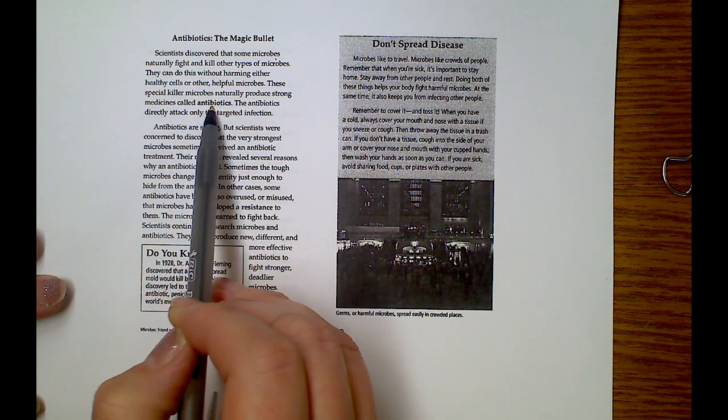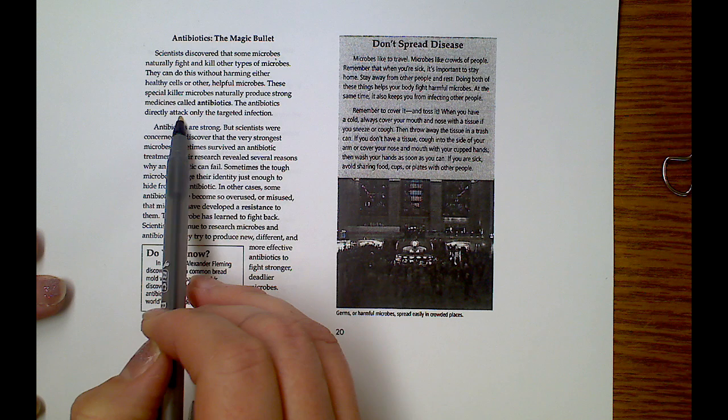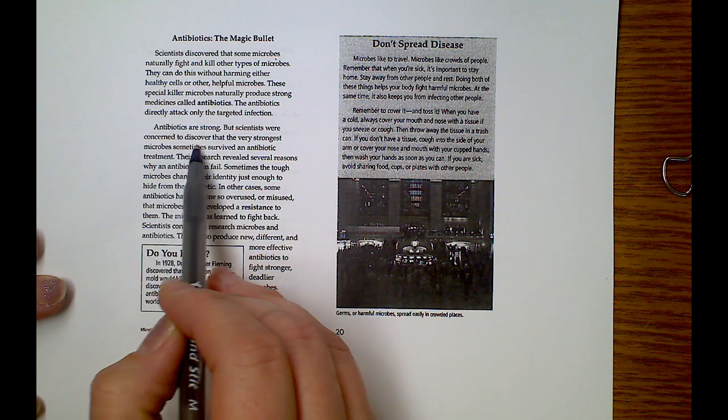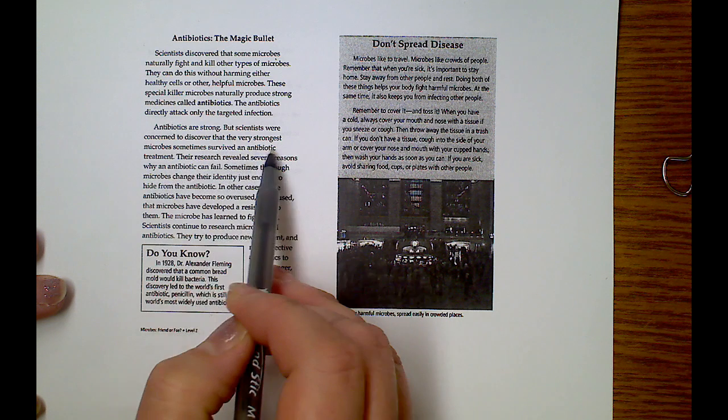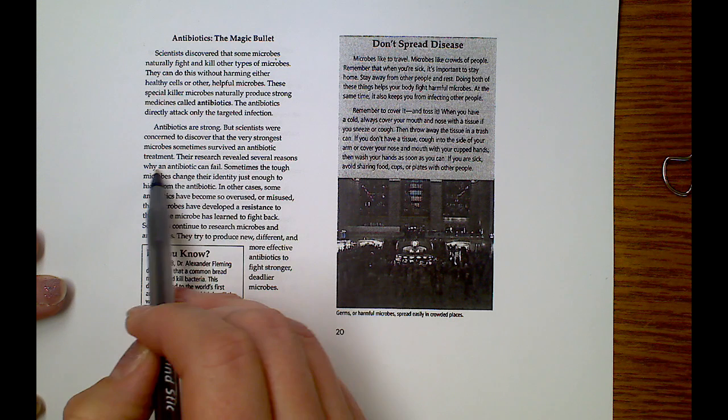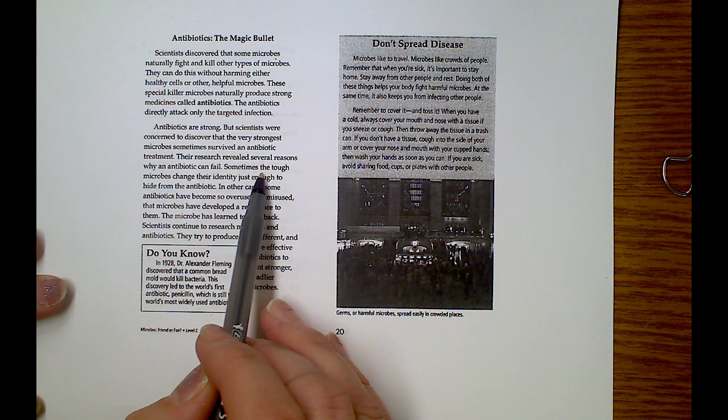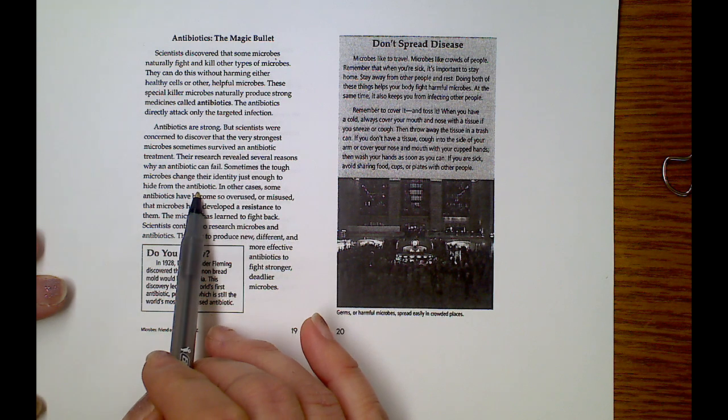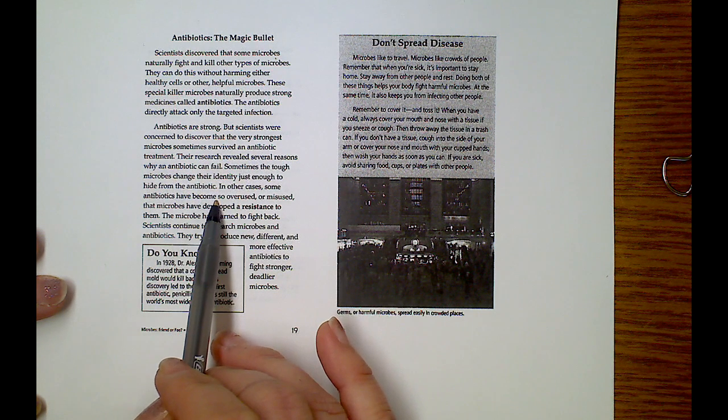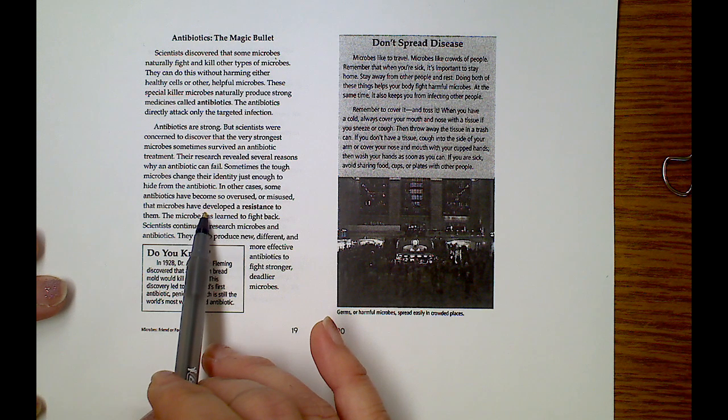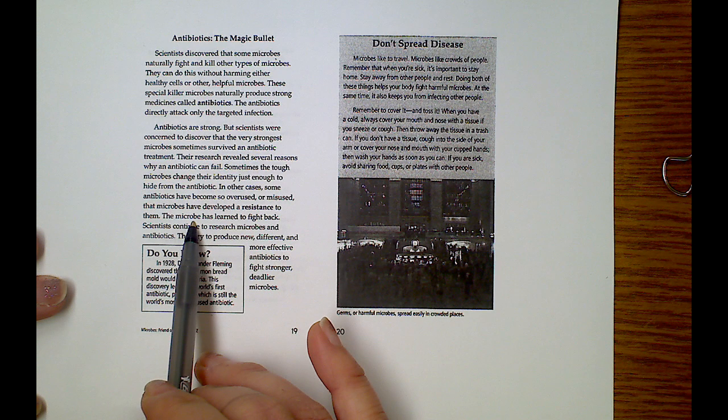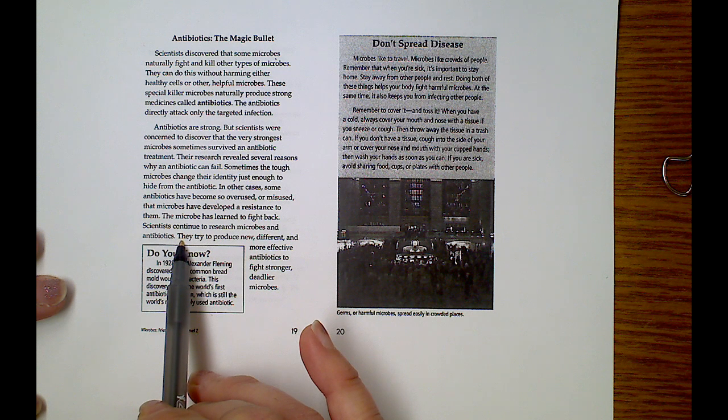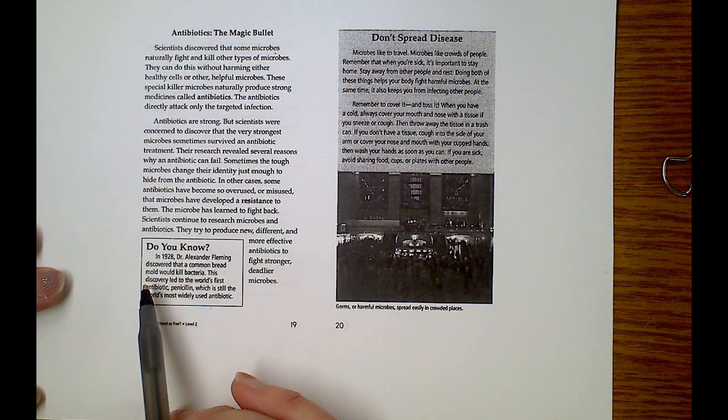These special killer microbes naturally produce strong medicines called antibiotics. The antibiotics directly attack only the targeted infection. Antibiotics are strong, but scientists were concerned to discover that the very strongest microbes sometimes survived an antibiotic treatment. Sometimes the tough microbes change their identity just enough to hide from the antibiotics. Isn't that crazy? In other cases, some antibiotics have become so overused or misused that microbes have developed a resistance to them. The microbe has learned to fight back.